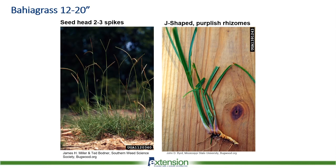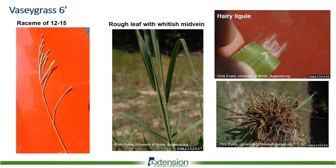Bahiagrass is very common in south Alabama and seen some in northeast Alabama, but not as prominent. It's fairly easy to identify through the V-shaped spikes on the seed head — sometimes three but most often two. Most distinctive is the J-shaped purplish rhizome. When you dig at the sod layer and uproot bahiagrass, you'll find that purplish J-rooted rhizome, which is very distinctive of that species.